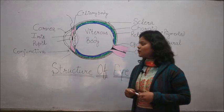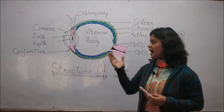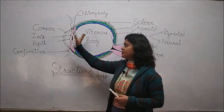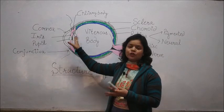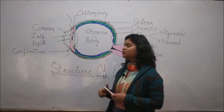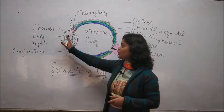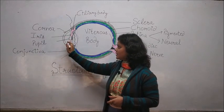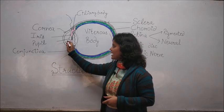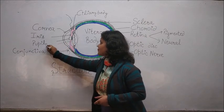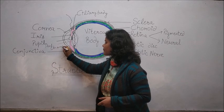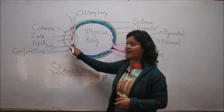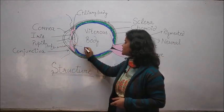When we talk about iris, iris also does an important function. Iris divides the interior chamber and divides the front of the eye into the anterior chamber and the posterior chamber. In front of the iris, this is an anterior chamber. And behind the iris, there is a posterior chamber.